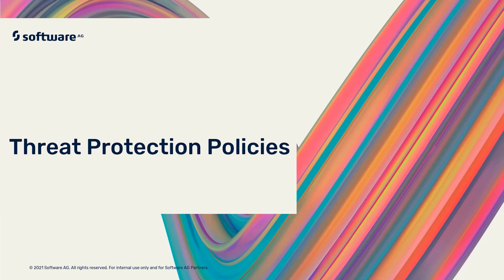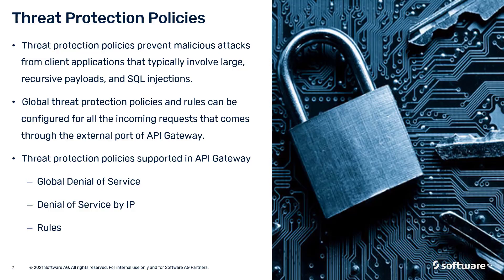Hello everyone, welcome to the session. In this video we will see how to use threat protection policies in API Gateway. Threat protection policies prevent malicious attacks from client applications that typically involve large recursive payloads and SQL injections. Global threat protection policies and rules can be configured for all the incoming requests that come through an external port of API Gateway.